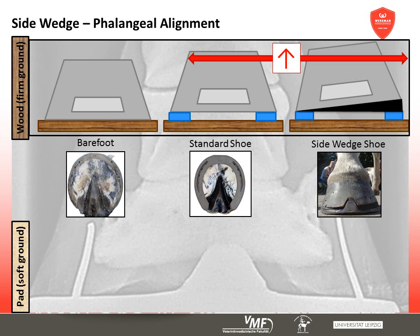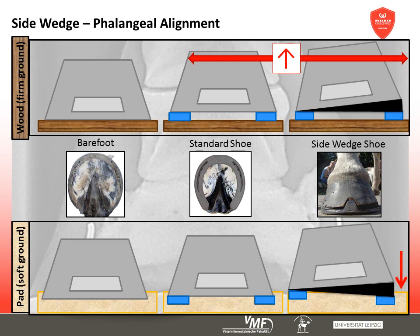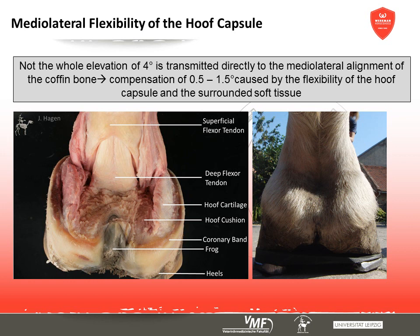On soft ground the wedge side enters the ground easily, so the lateral elevation is significantly reduced compared to the situation on hard ground. It is most likely that isolated wedges would almost completely neutralise the effect on soft ground. The lateral raise of the hoof is not passed on to the coffin bone's position in its entirety — half a degree up to one degree is compensated. The flexible architecture of the hoof capsule and embedded structures such as the frog, heel pad, and hoof cartilage explain this, enabling compensation of unilateral mediolateral stress even on uneven surfaces.